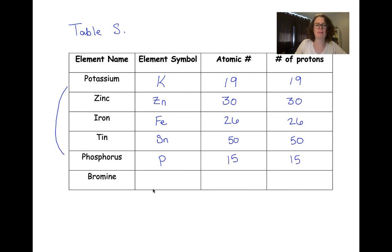Our last example here is bromine, which has a symbol of Br, capital B, lowercase r. Its atomic number is 35, which means it has 35 protons.